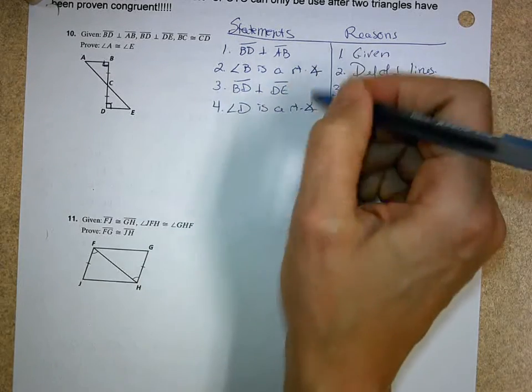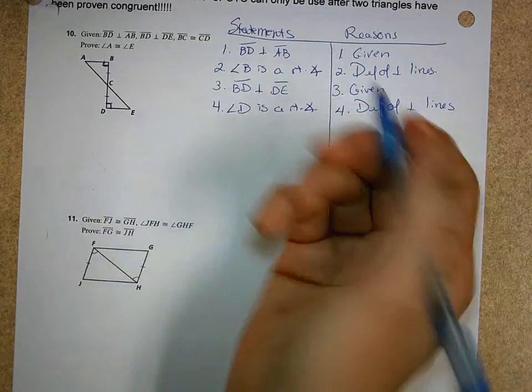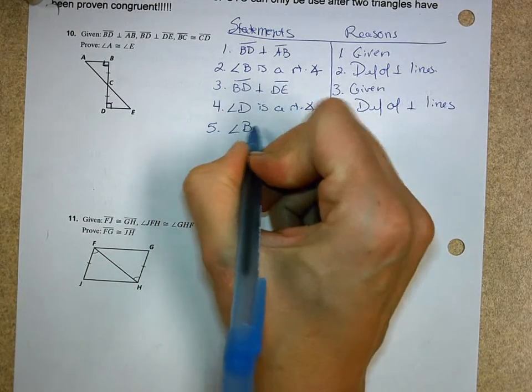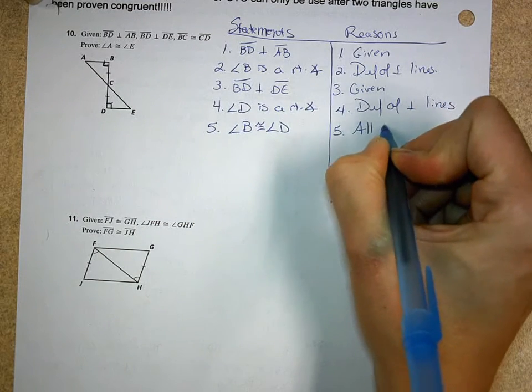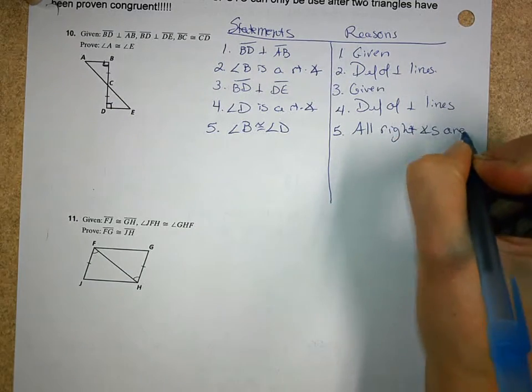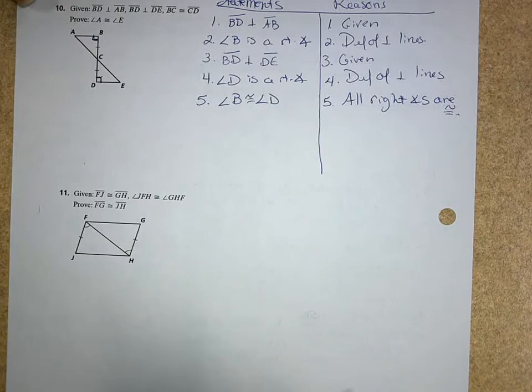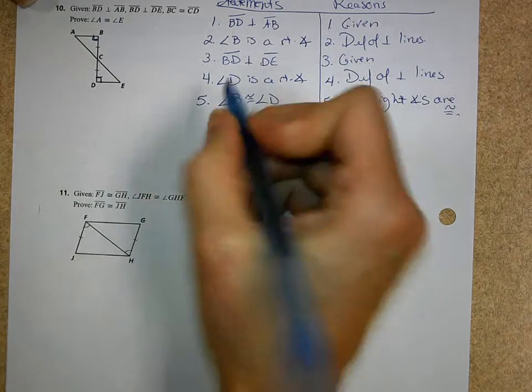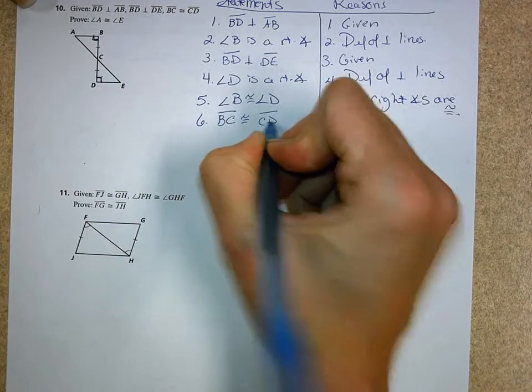So now, what do we know about those two right angles? Remember, I've got to show pairs of congruent things. Well, I know they're congruent to each other. Now, what theorem tells us that? All right angles are congruent. So we have those. And then once we're done, where do we go again? Yeah, we go back to our given.